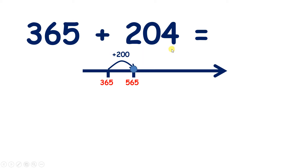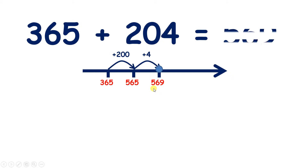So now we need to add our four units. If we have five units and we add four, that gives us nine units, so our answer is 569.